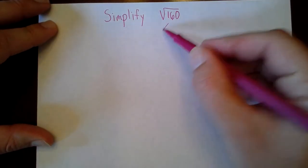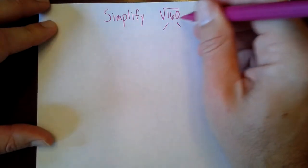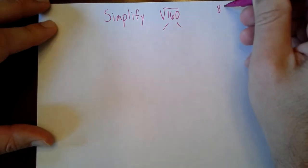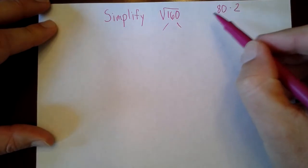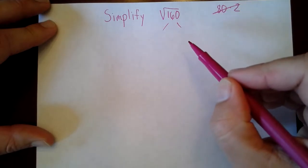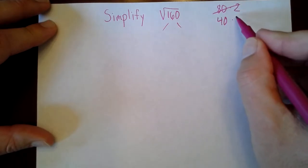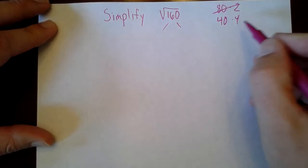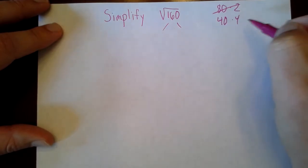What we can do is break this down into factors. Off to the side we could do 80 times 2, but neither one of those is a perfect square factor, so I don't want to do that. I could do 40 and 4 — 40 is not a perfect square, but 4 is. So I could do 40 and 4.